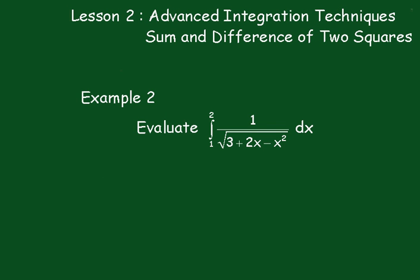Right, in number 2, we have to evaluate the interval between 2 and 1 of 1 over the square root of 3 plus 2x minus x squared. Now this becomes 1 over... Now just rearrange this a little bit. It's going to be 3 minus bracket x squared minus 2x dx.